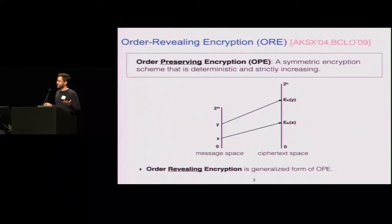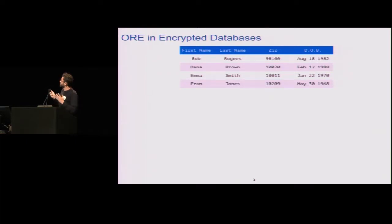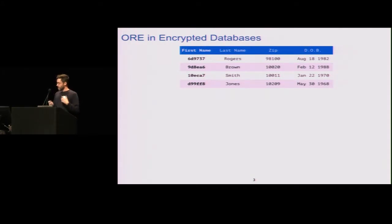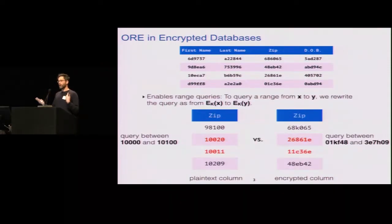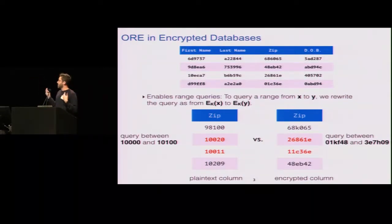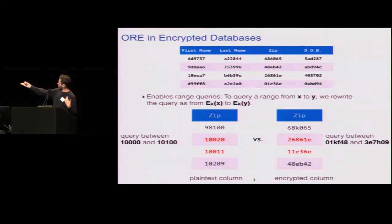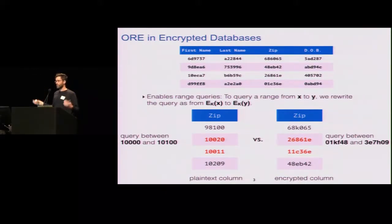Why would you want to build such a thing? It's for encrypted database protections. You would take a database table with a bunch of columns, pick a key for the first name column and encrypt it, replacing the plaintexts with order-preserving encryption ciphertexts across all columns. This has the nice feature that it enables range queries on this encrypted database — if you wanted to query for the range between X and Y, you could rewrite this as a query from the encryption of X to the encryption of Y, say for zip codes in some range in New York.